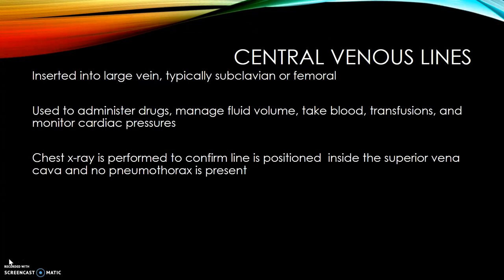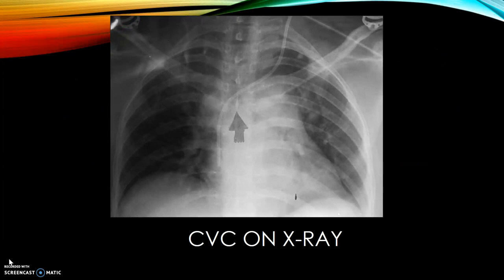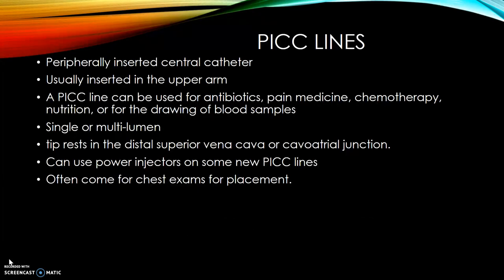Central venous lines are typically inserted into a large vein, usually the subclavian or femoral. They can be used to administer drugs, manage fluid volume, take blood, transfusions, and monitor cardiac pressures. PICC lines are peripherally inserted central catheters, usually inserted in the upper arm. A PICC line can be used for antibiotics, pain medication, chemotherapy, nutrition, or drawing blood samples. It can be single or multi-lumen, with the tip resting in the distal superior vena cava or cavoatrial junction. Power injectors can be used on some new PICC lines to administer contrast, and they often come for chest exams for placement.